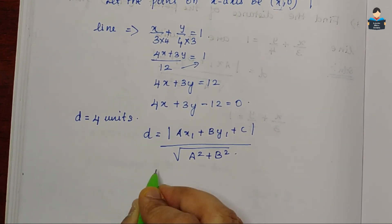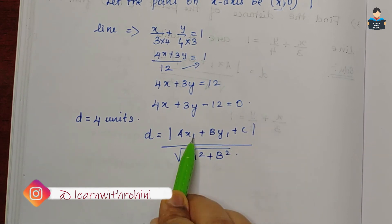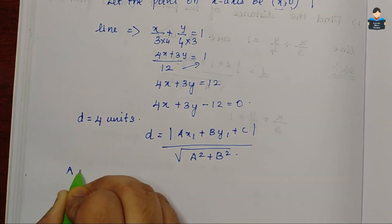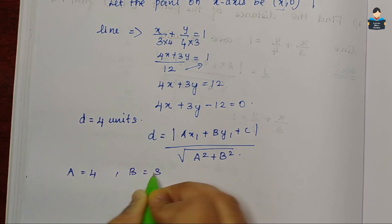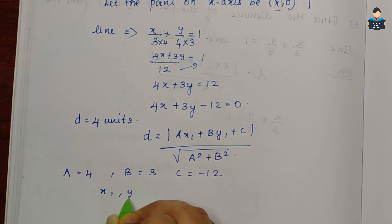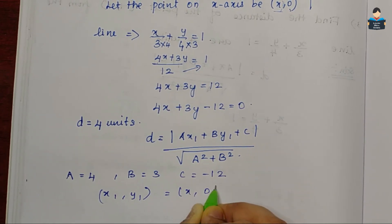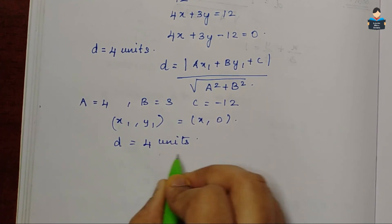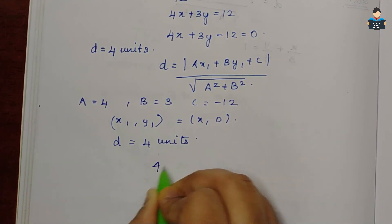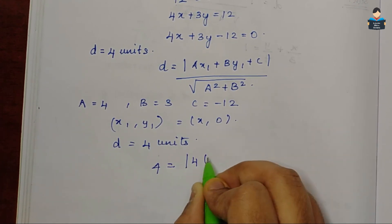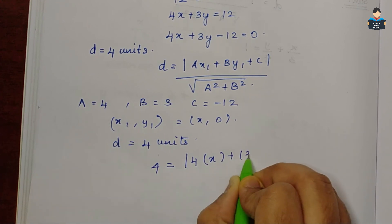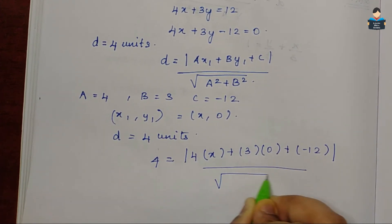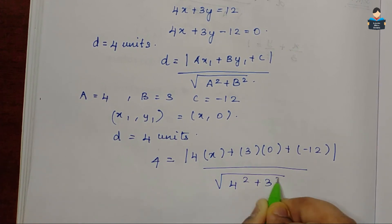இங்க, a value, b, c, x1, y1 எடுத்திக்போறேன் — and d values எல்லாம் ஆதியோ எடுத்தே. So, a வந்து 4, b is 3, and c வந்து minus 12. x1, y1 வந்து x, 0. And d distance வந்து 4 units அப்படின வந்து கொடுத்திருக்காங்க. So, இப்போ formula-ல நம்ம apply பண்ணலாம். 4 equal to modulus of 4 into x1 வந்து x, plus b வந்து 3 into y1 வந்து 0, plus minus 12, by square root of a square வந்து 4 square plus 3 square.